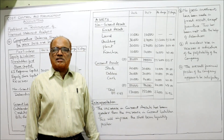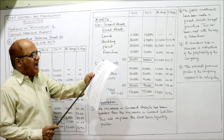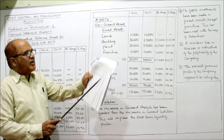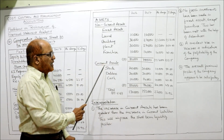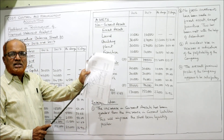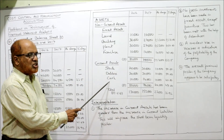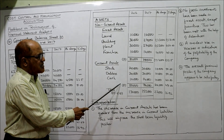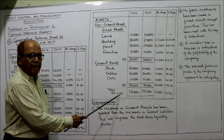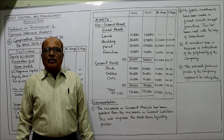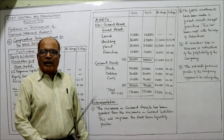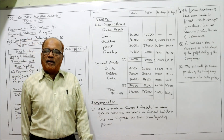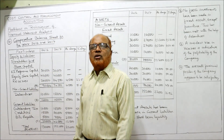On the assets side, non-current assets include fixed assets: land, building, plant, and furniture. Current assets include stock, debtors, and cash. D is the total of fixed assets and E is the total of current assets. D plus E totals 1,30,000 for last year and 1,52,000 for current year. The balance sheet tallies because liability side and asset side are equal for both years.